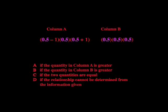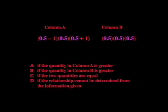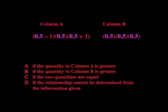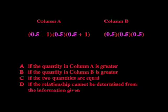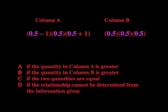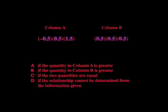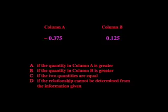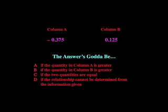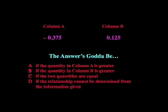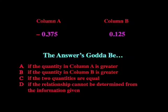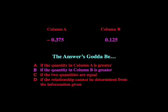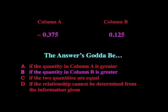We can check this possibility by using 0.5 instead of x. That makes column A: 0.5 minus 1, times 0.5, times 0.5 plus 1, and column B: 0.5 times 0.5 times 0.5. This turns column A into negative 0.5 times 0.5 times 1.5, which equals negative 0.375, and column B into 0.125. Students again concluded the answer's gotta be B.